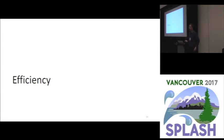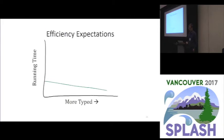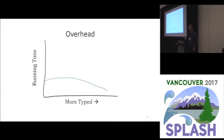When we talk about efficiency and Gradual Typing, one thing that comes to mind is that a compiler should be able to use type annotations in order to produce more efficient code. So ideally, the more type annotations we have, the faster our code should run. On the other hand, in order to protect the invariants of static typing from dynamic code, we need to have some runtime checks, especially when there is mixed code. So we might expect some bump in the middle, where the overhead produced due to runtime checks cannot yet be balanced out by the optimizations we get from types.